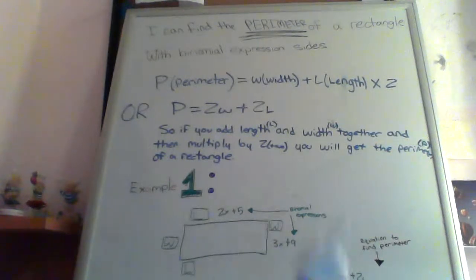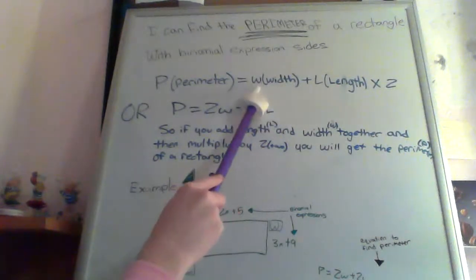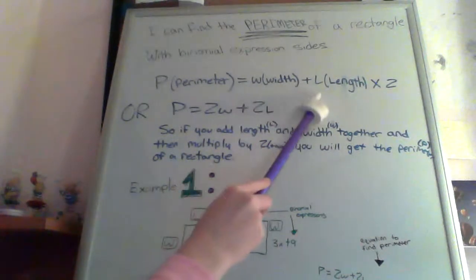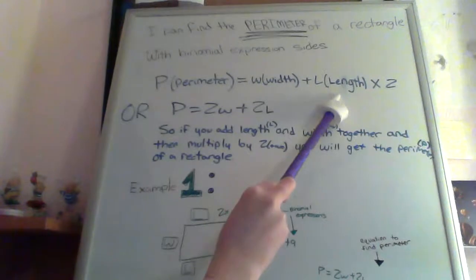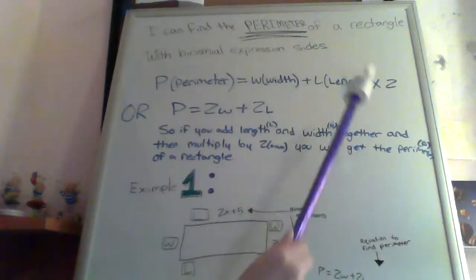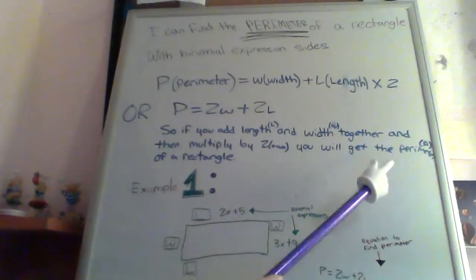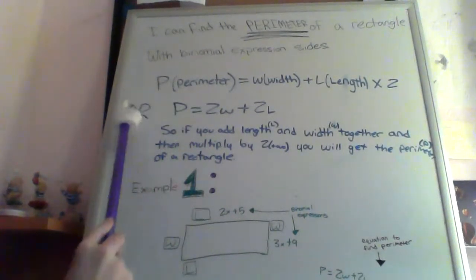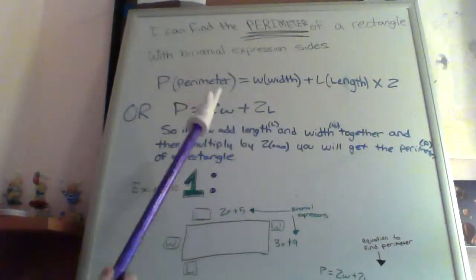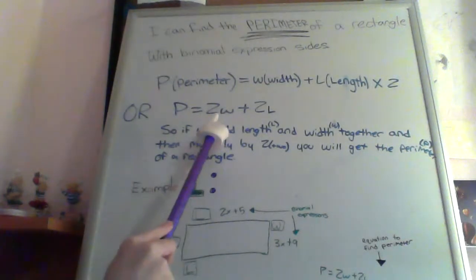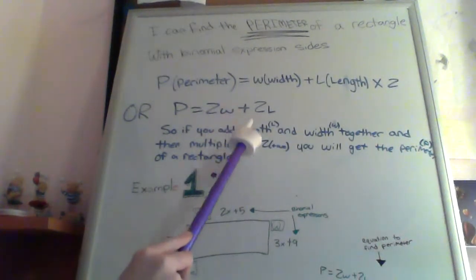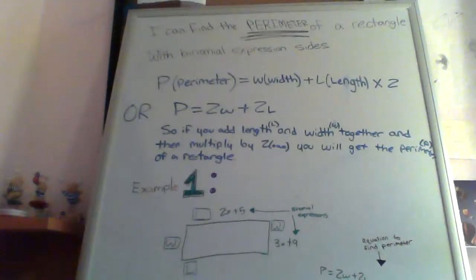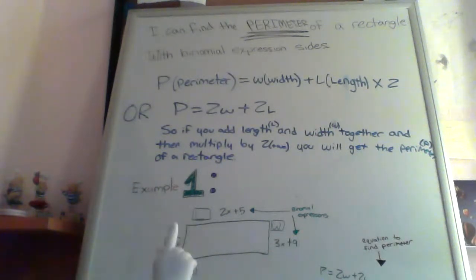What you do, basically, is you take the width, which is W, and then you add that to the length, which is L, and then you multiply that by 2. By doing that, you figure out the perimeter, which is P. Or, if you want to make that simpler, it's P equals 2W plus 2L. So if you add the length and the width together and then multiply by 2, you will get the perimeter of a rectangle.